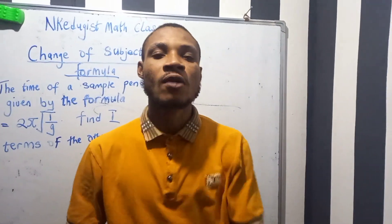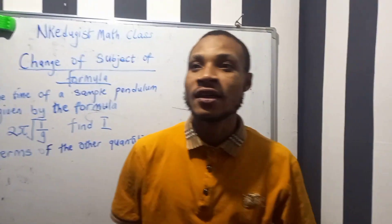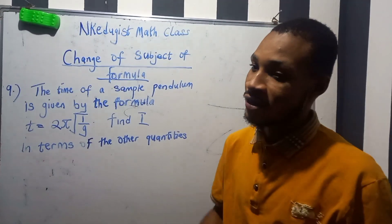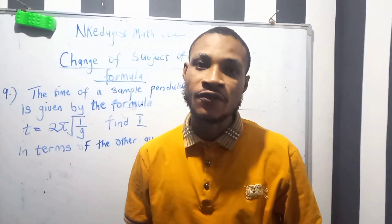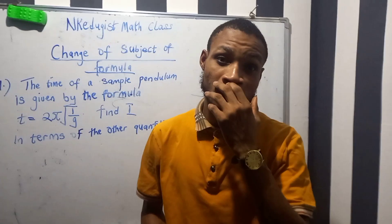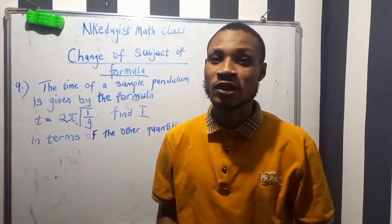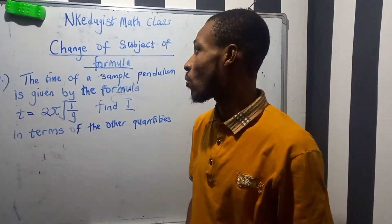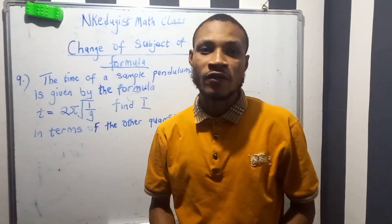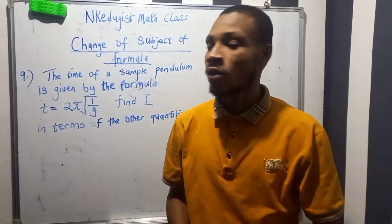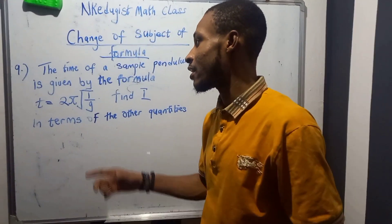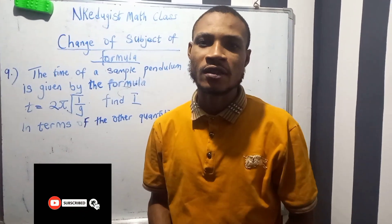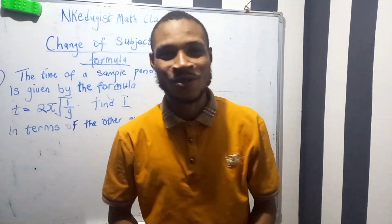Hello everyone, welcome back to our YouTube channel. In this channel, what we do in NKLG's Masterclass is we solve mathematics questions using different textbooks and also solve assignments for students. In today's solving, we are going to begin with a change of subject formula, number 9. We have solved number 1 and number 8 and the link is below. This might be very simple, so please subscribe, like, click, and comment to appreciate us. Let's go to the board.